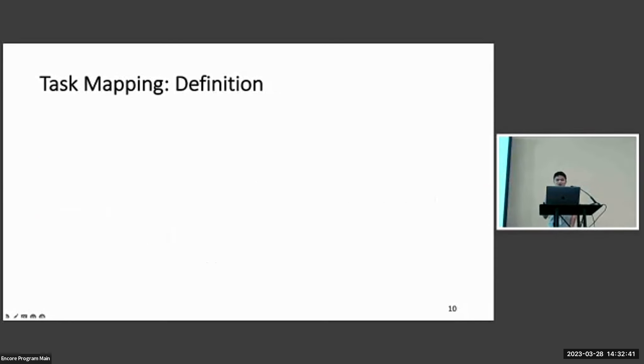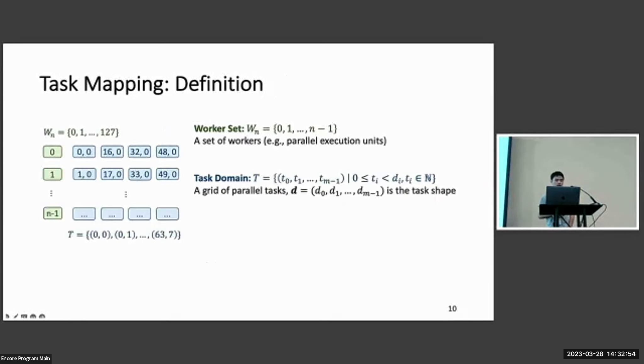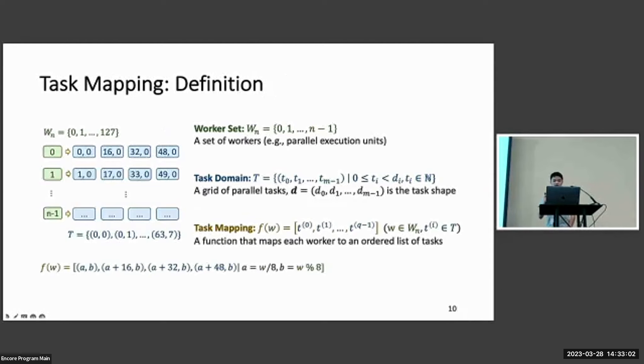Let's have a look at the definition of task mapping. Each task mapping has a worker set, which contains the set of parallelizable execution units that we want to schedule. For example, it can be some threads or warps or thread blocks. And there are a bunch of tasks we describe as a task domain that contains the hypercube of tasks that we need to schedule or work on. And what task mapping does is to map the worker index to a list of tasks that that worker will work on. In the previous example, we have a task mapping that maps worker index w to four tasks, and then the task can be directly calculated from the worker index.